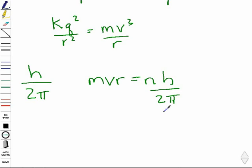Rearranging this expression for v, he found that velocity can be represented by n h divided by 2 pi m r, m being mass.